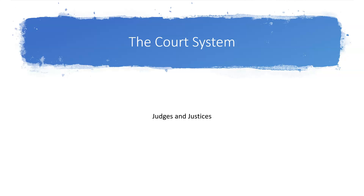Let's talk about the terms judges and justices. A judge presides over a court, and there are different levels of the court system. A justice would preside over the appellate and Supreme Court levels of courts. Judges are typically in the state trial courts or federal trial courts, and justices are judges referred to as justices that serve in an appellate capacity.